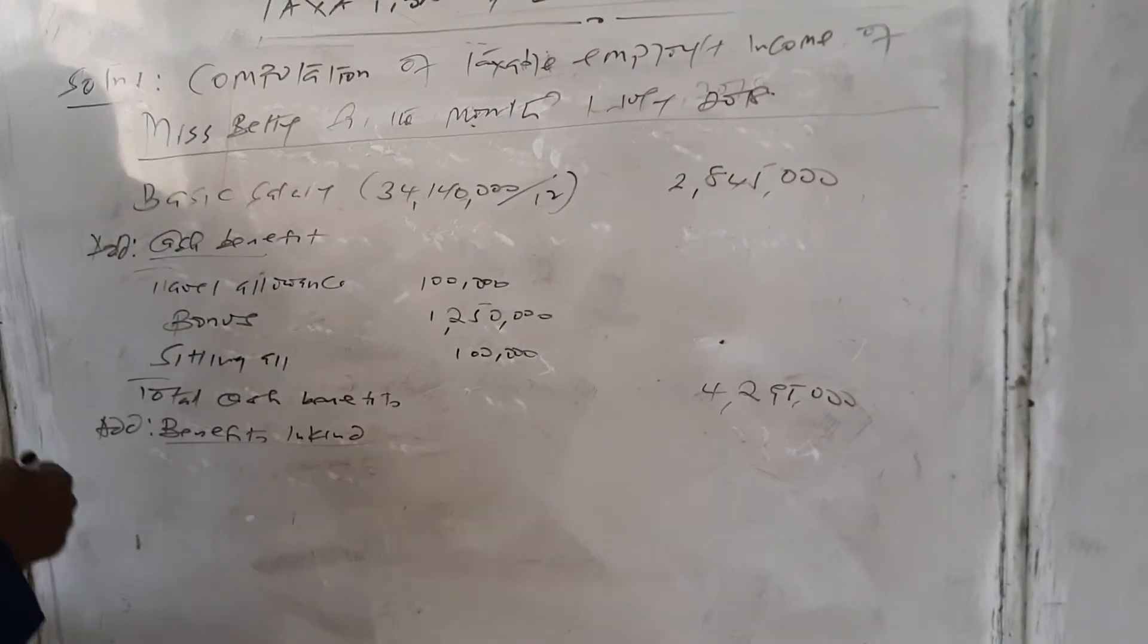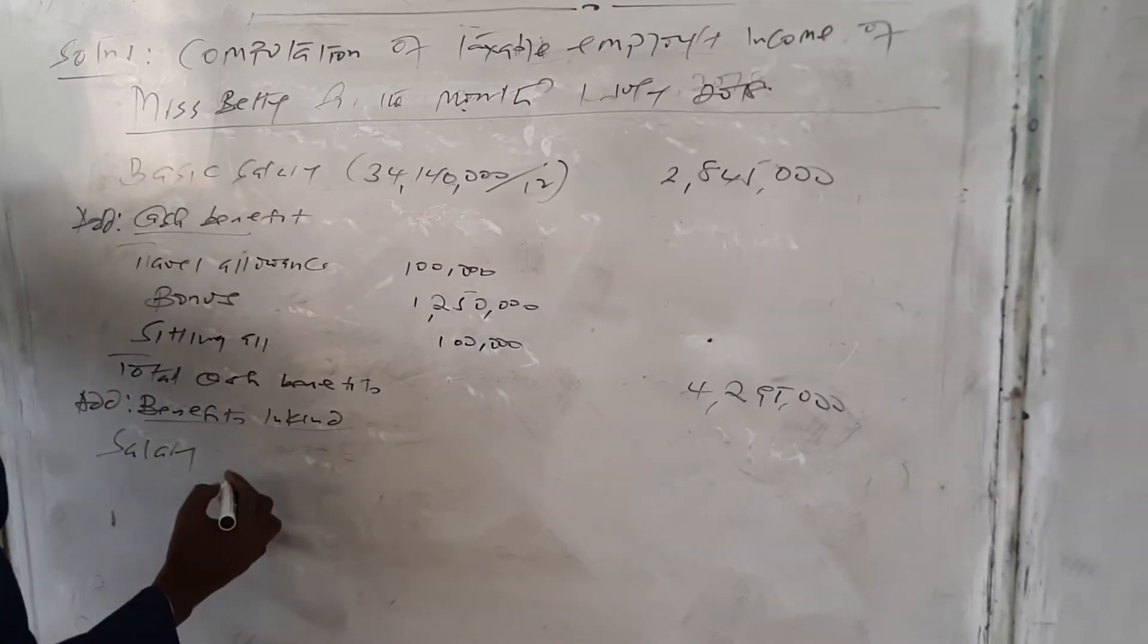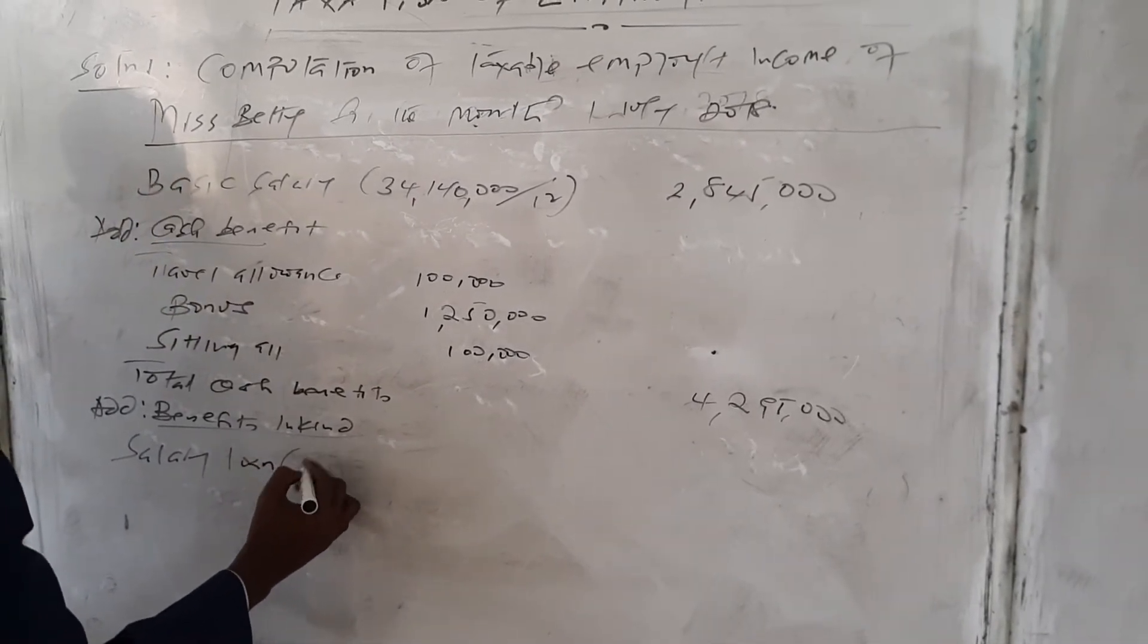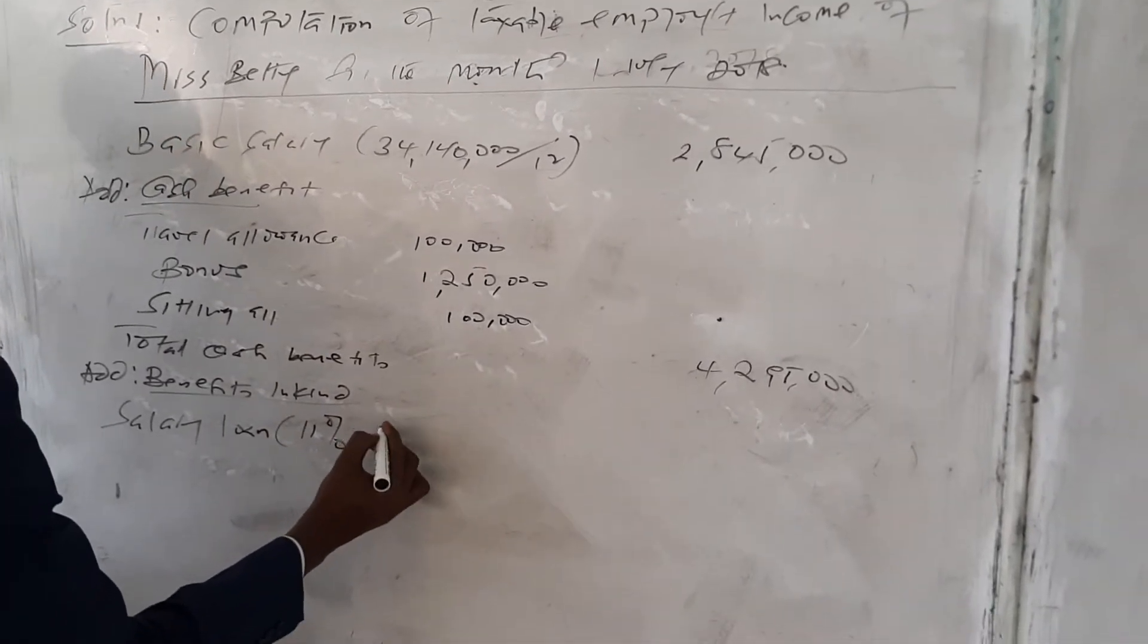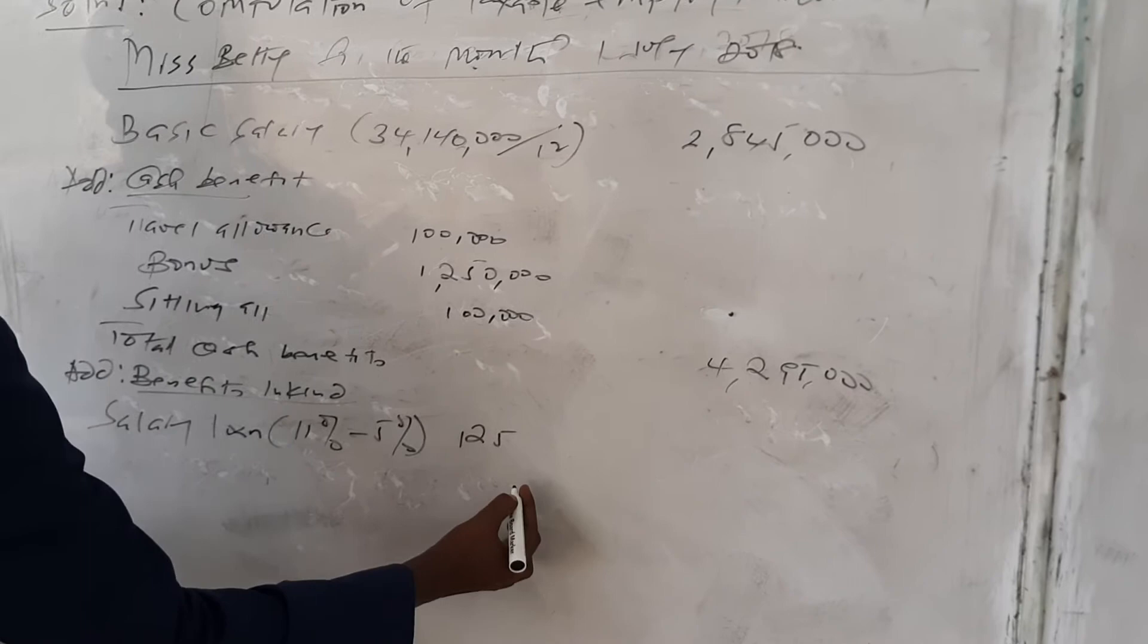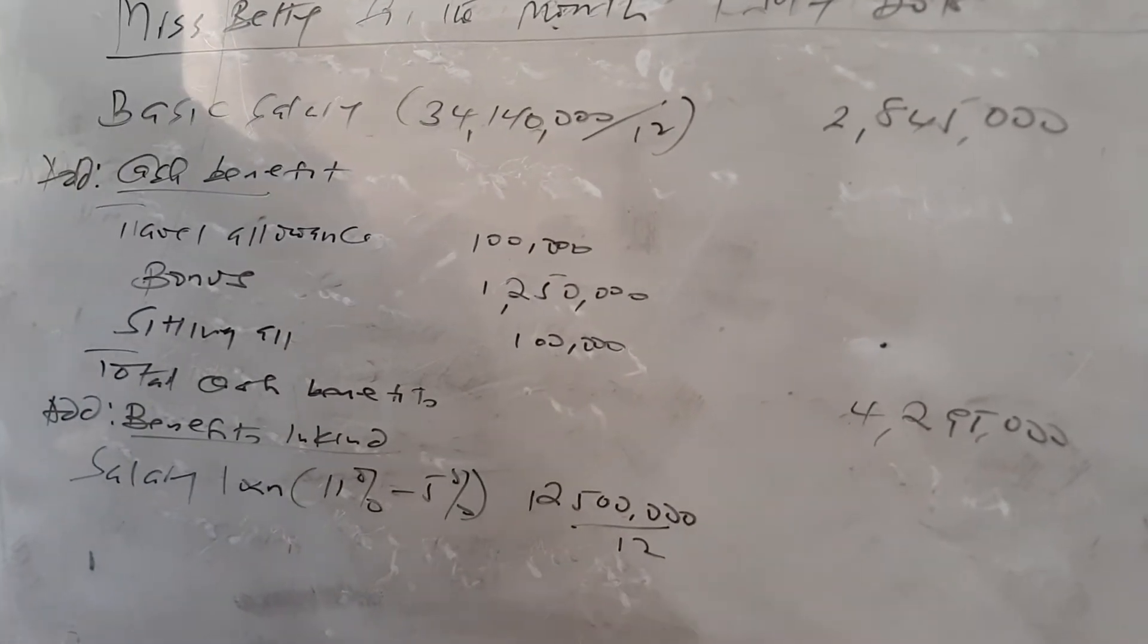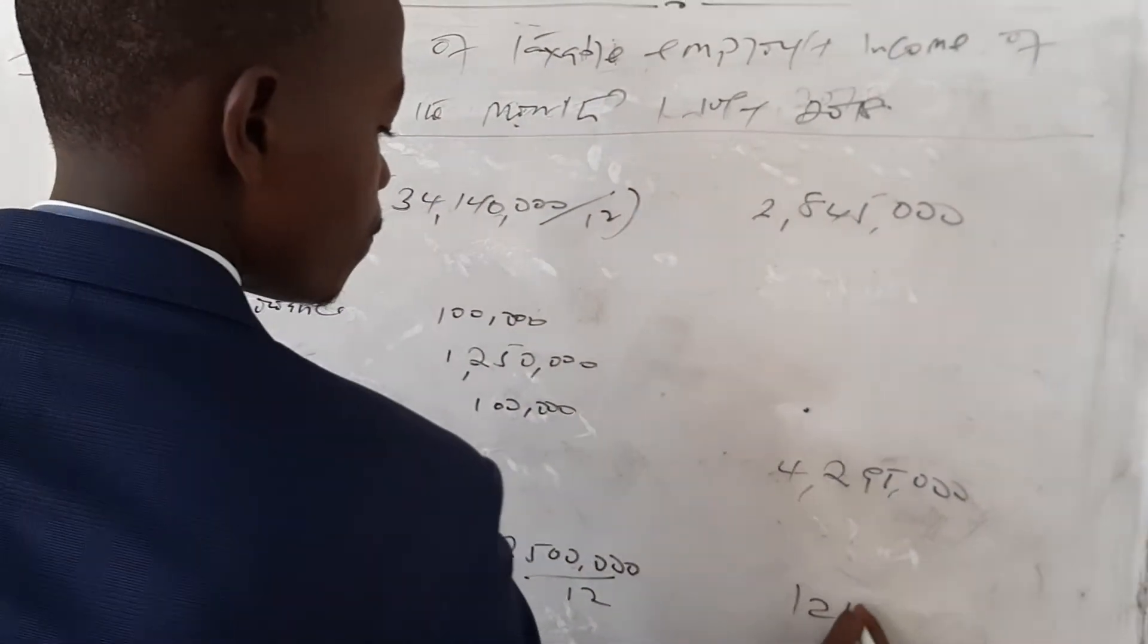Let's add fringe benefits. In fringe benefits, there is salary where the interbank rate was 11% minus the offer rate, which is 1,215,000, divided by 12 to get the benefit of 12,500.